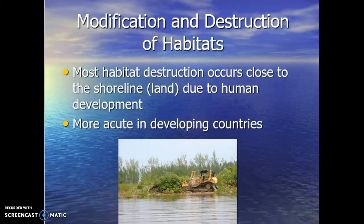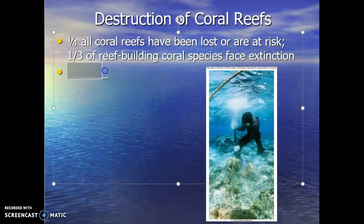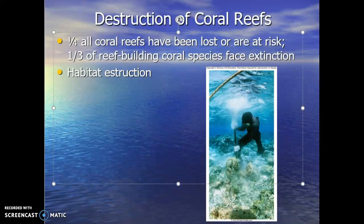Our focus primarily is what's going on with the coral reefs. The destruction of coral reefs is a huge concern. Approximately one-fourth, or 25%, of all coral reefs have been destroyed or are at risk of destruction — at a stage where they're going to be collapsing very soon if they haven't already. It's estimated one-third, or about 33%, of reef-building coral species face extinction in the near future. Some of the main causes include habitat destruction, which is what we were just talking about.